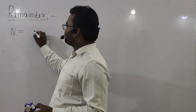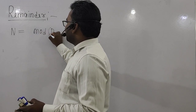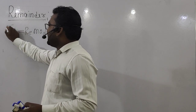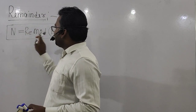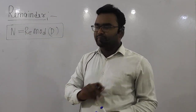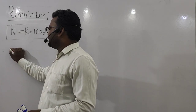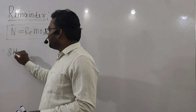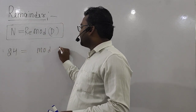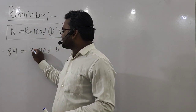N is the number, D is the divisor, and the remainder is R. So N mod D gives us remainder R. Here is a simple example: the number is 24, divided by 5 — what is the remainder? It is 4.